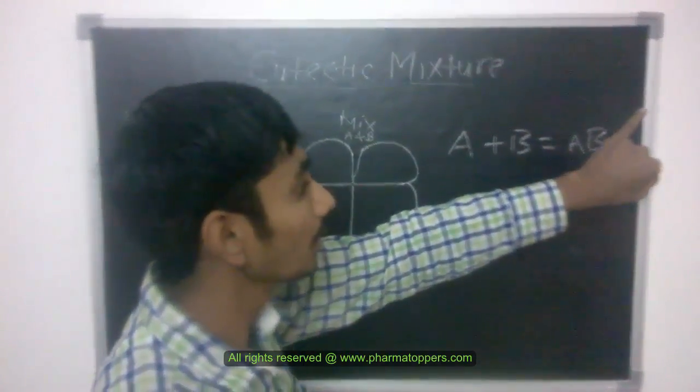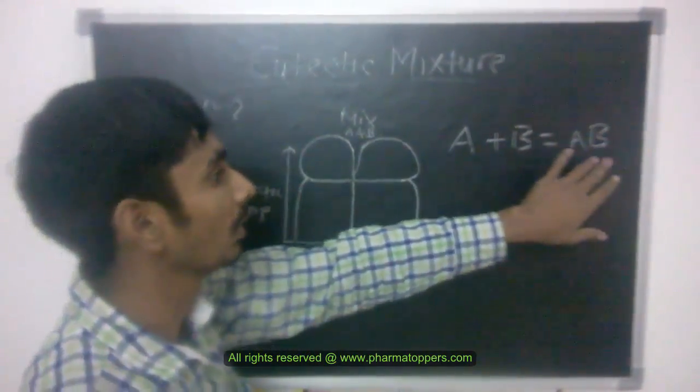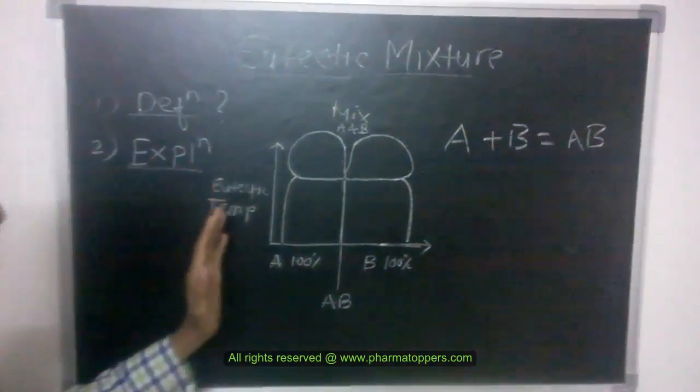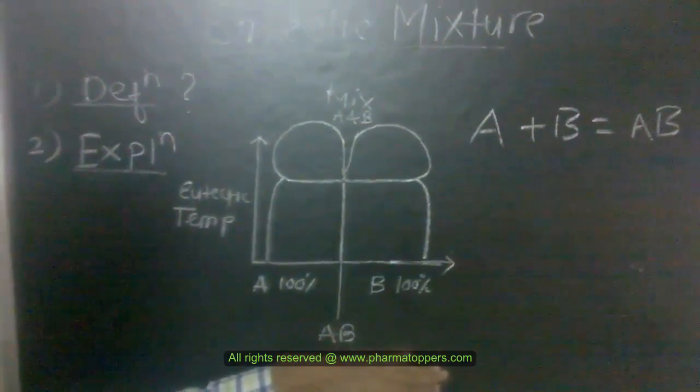And it has a melting point lower than those individual components. We see the explanation from this diagram. This is the temperature, eutectic temperature versus reaction mixture.